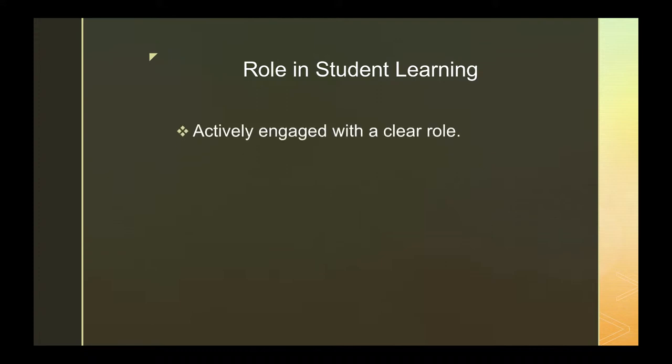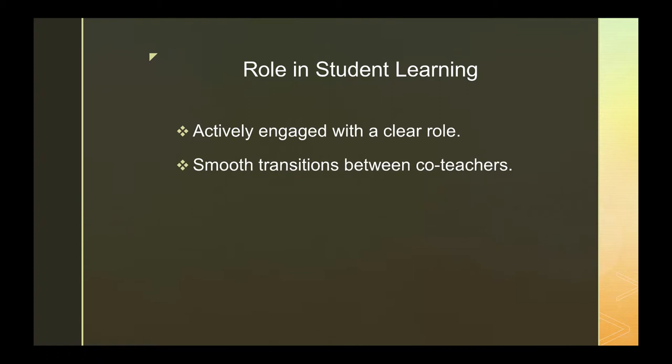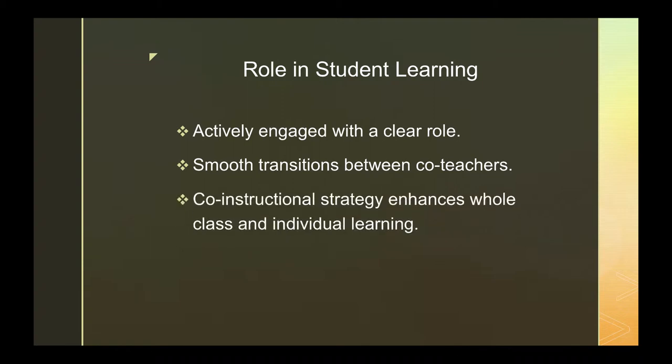After you've selected a model, it needs to be clear what each co-teacher's role will be in providing instruction. For co-teaching to work well, there should be a smooth transition between co-teachers. This happens when both co-teachers understand their role — which should have been delineated in co-planning — or when both teachers have a strong relationship that allows them to teach together seamlessly. Usually this happens when effective co-planning has occurred and when working with the model over time to enhance whole-class and individual learning.